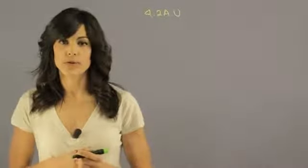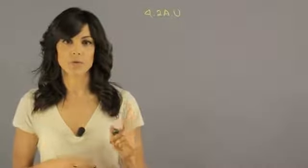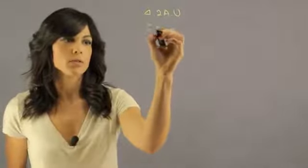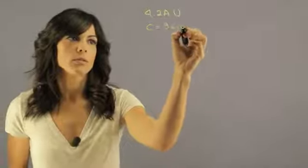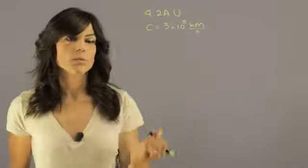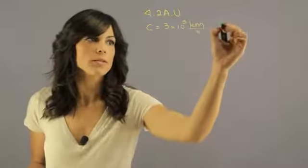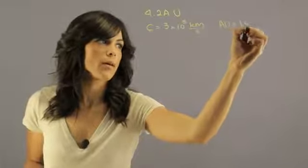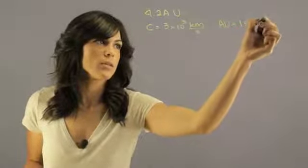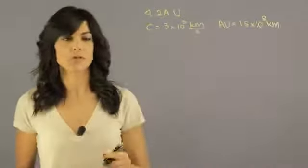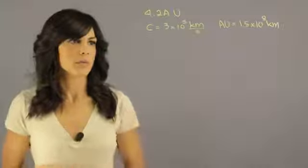Now you need a couple of conversion factors in order to turn that into time. So we need the speed of light which is 3 times 10 to the fifth kilometers per second. You also need to know that one astronomical unit is equal to 1.5 times 10 to the 8 kilometers. I'm putting everything in kilometers to save you some time.